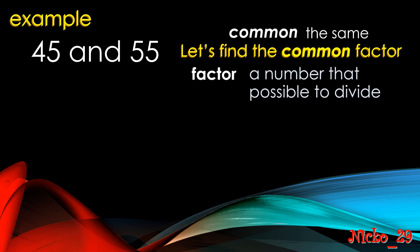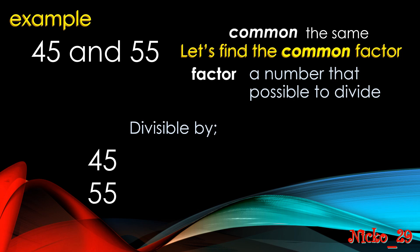We will identify the possible numbers to divide 45 and 55. We will use our knowledge about divisibility rules so we can easily identify what possible numbers can be used. For 45 and 55, both of them are divisible by 5. But first, let's see what are the possible factors of 45 — starting with 3, 5, 9, and 15.